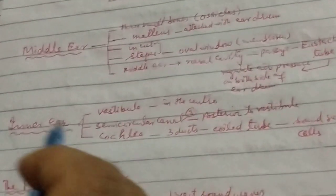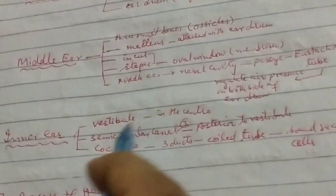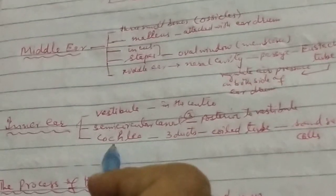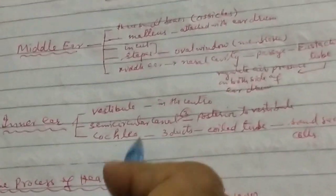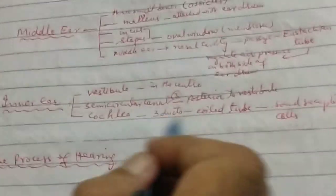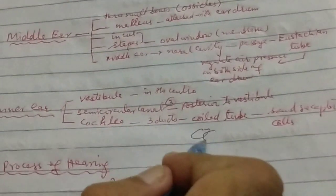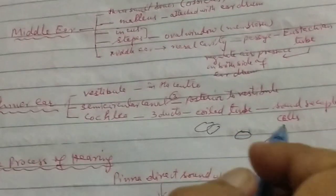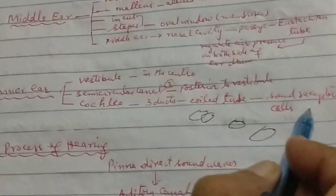The inner ear has three types: vestibule, semicircular canal, and cochlea. The cochlea is a coiled tube which contains sound receptor cells.